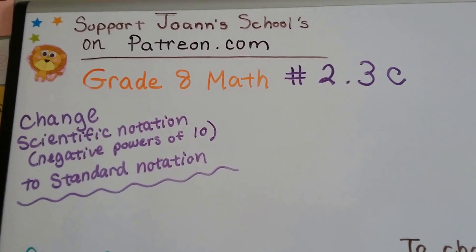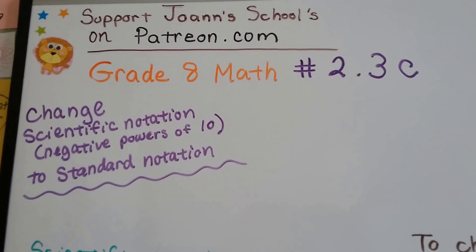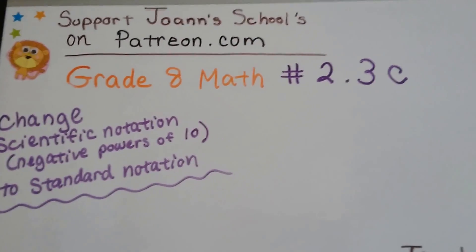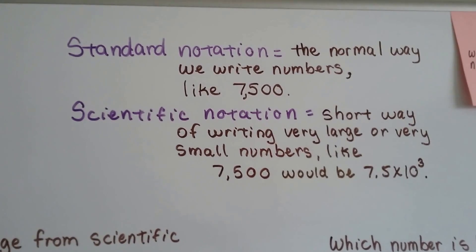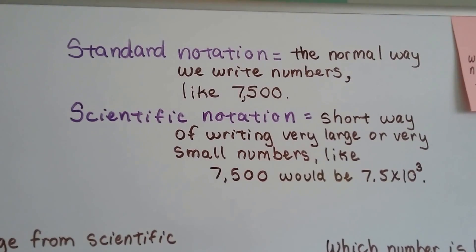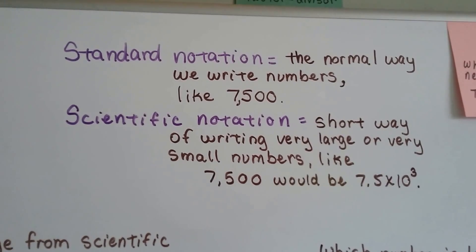Grade 8 math number 2.3c: changing scientific notation that has negative powers of 10 to standard notation. Remember, standard notation is the normal way we write numbers, like 7,500, and scientific notation is like 7.5 times 10 to the third power.